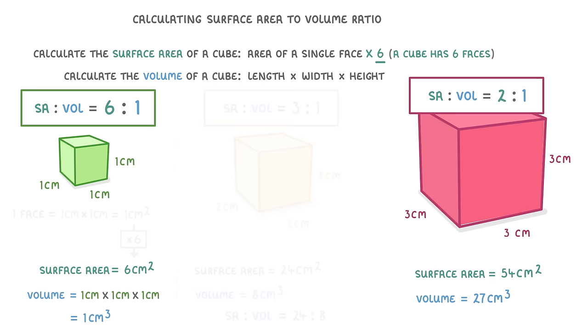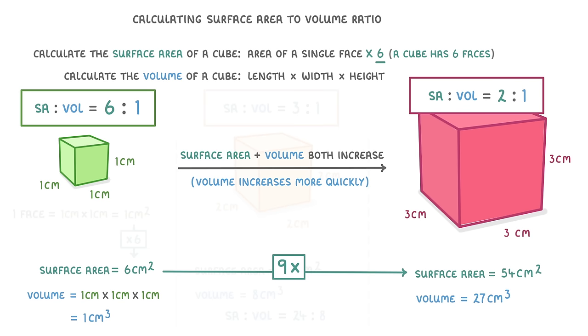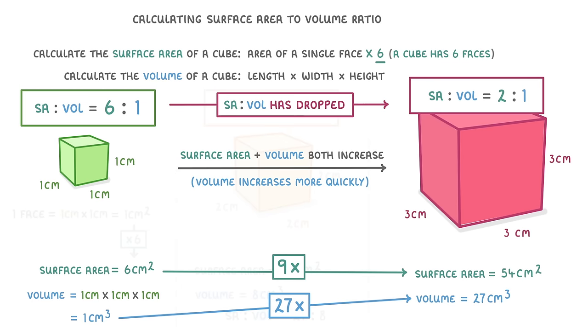So if we now compare the smallest and biggest cubes, we can see that as the cubes get larger, their surface area and their volume both increase, but importantly their volume increases much more quickly. For example, the surface area only gets 9 times larger here, but the volume gets 27 times larger, and this is why the surface area to volume ratio has dropped from 6 to 1 to 2 to 1.